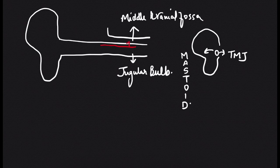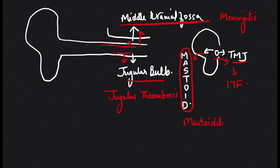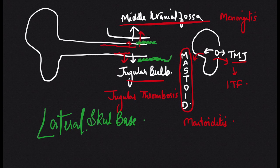These relations matter clinically because infection of the EAC with bone destruction can spread superiorly to the middle cranial fossa causing meningitis or extradural/subdural abscess, inferiorly to cause jugular thrombosis, anteriorly to infect the TMJ or infratemporal fossa, and posteriorly leading to mastoiditis. If infection involves all bony walls of the skull base, it is called lateral skull base osteomyelitis.